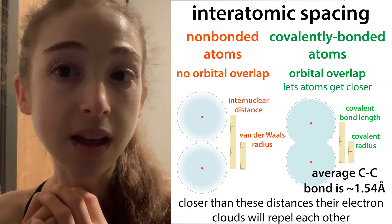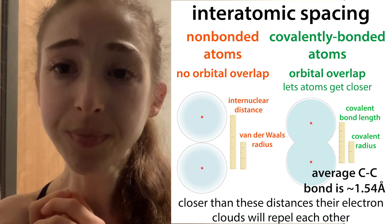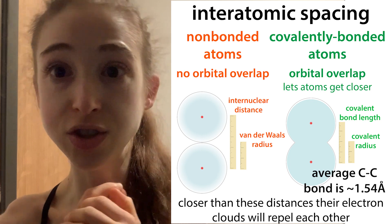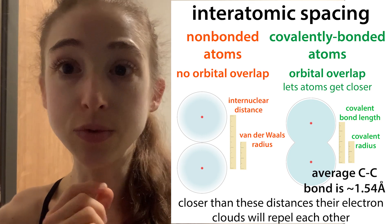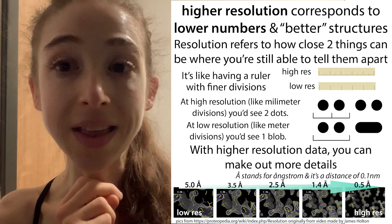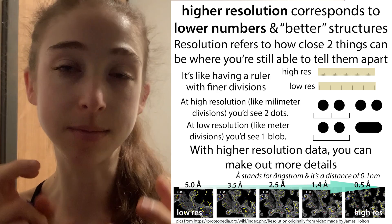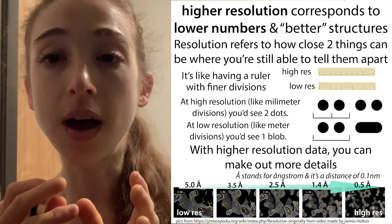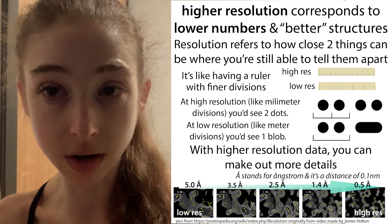The length of an average carbon-carbon bond is about 1.5 angstroms. So 1.5-ish angstroms is what we refer to as atomic resolution. At this resolution, we're able to tell apart all the different atoms — though you can't typically see the hydrogens, because they have shorter bond lengths.